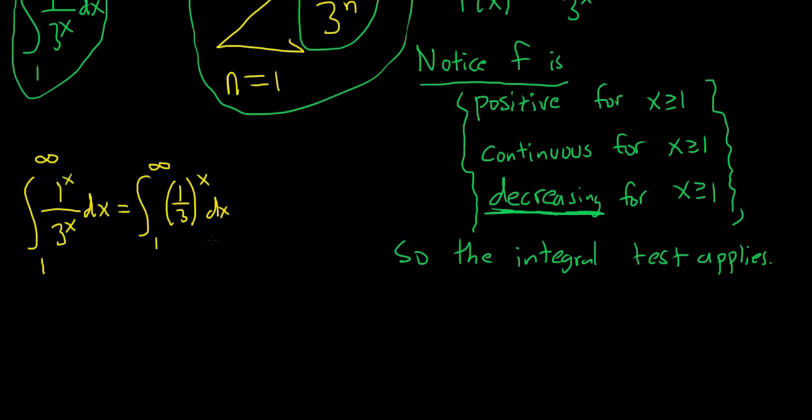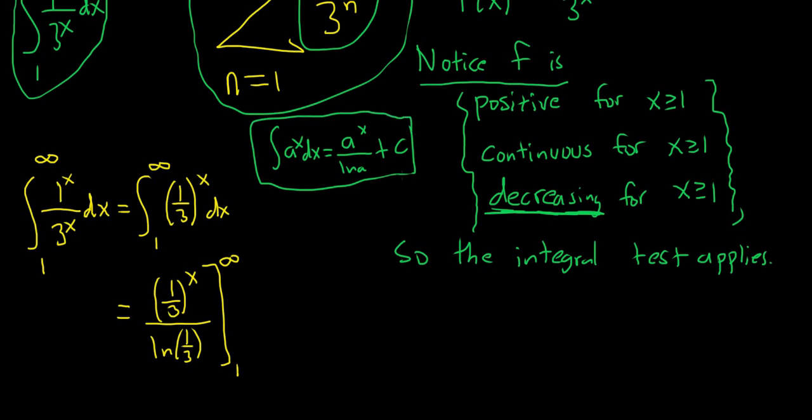And maybe it's been a while since you've seen this integral. But this is basically going to be 1 third to the x over the natural log of 1 third. It's a formula from the past and we're going from 1 to infinity. So if you have a to the x dx and you integrate that, the formula is a to the x over ln a plus c.